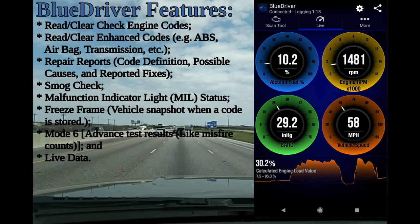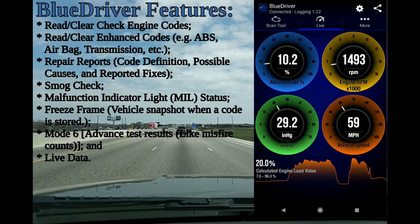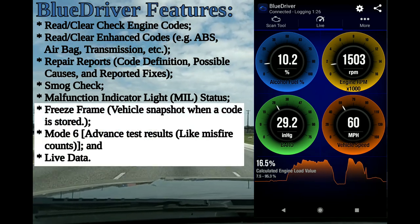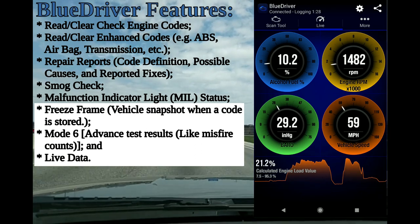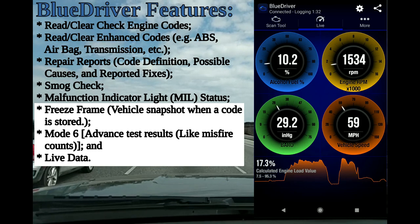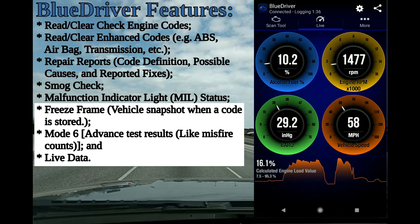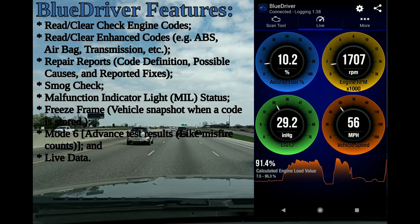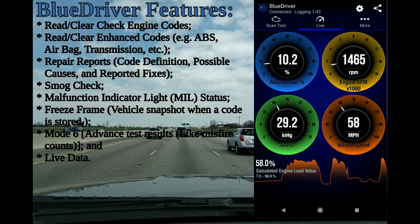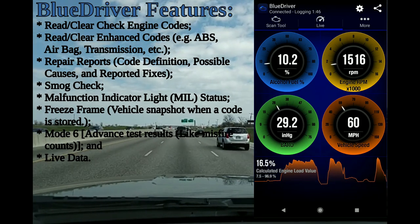Other features include smog check, malfunction indicator light status — which tells you the last time it threw a code — freeze frame, which is a vehicle snapshot when a code is stored, Mode 6 with advanced test results like misfire counts, and live data. You can configure those live data gauges however you want, with a number of available parameters.